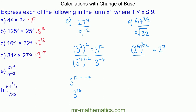For the denominator, the fifth root can be written as 32 to the power of one fifth. We write 32 as 2 to the power of 5, raised to the power of a fifth, which simplifies to 2 to the power of 1. Using the division rule, 2 to the power of 9 take away 1 gives 2 to the power of 8.